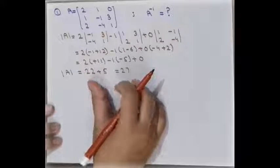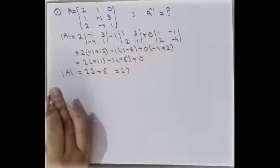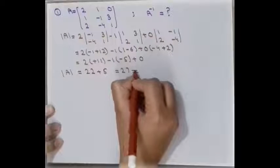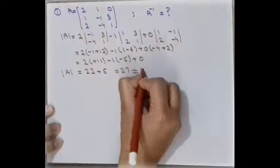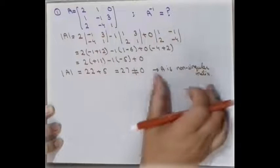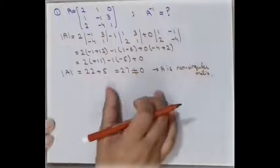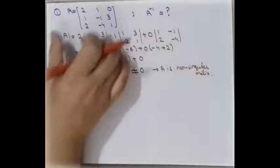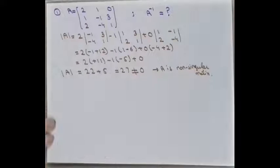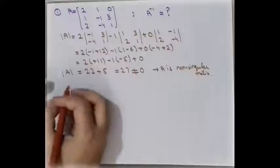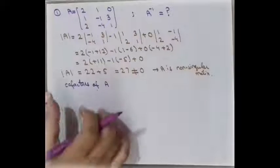The second step is to check whether the matrix is singular or not. Since the determinant is 27, which is not equal to 0, A is a non-singular matrix. This means the inverse of matrix A is possible, so we can move on to find the co-factors.